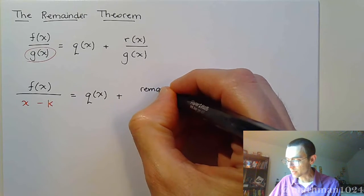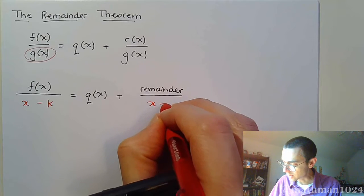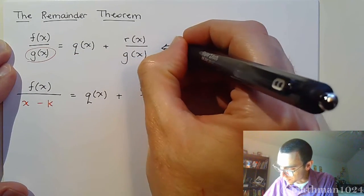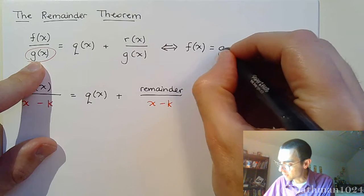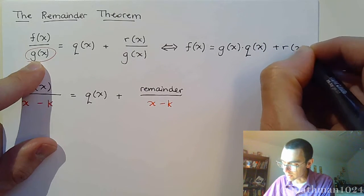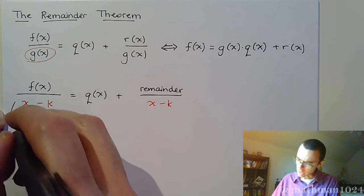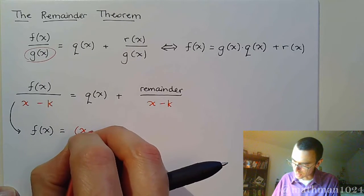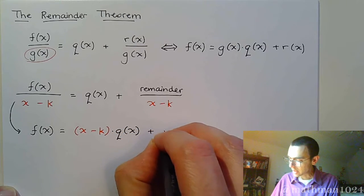We're going to get our remainder — just the remainder over what we were dividing by, the x minus k. We can go back and forth from this equation to rewriting this as f of x equals the product of the divisor times the quotient plus the remainder. So we can rewrite f of x to be the divisor, x minus k, times the quotient, and then plus the remainder.